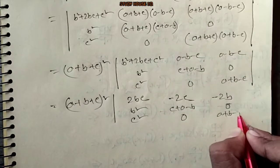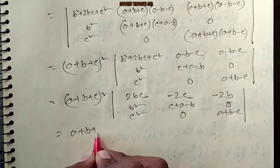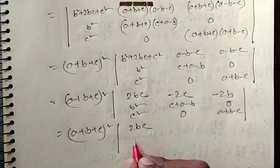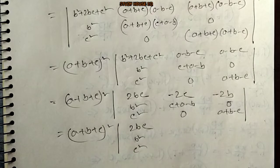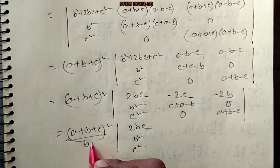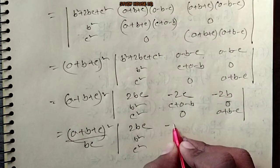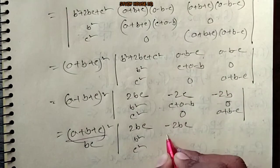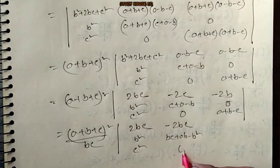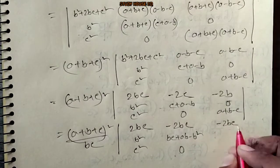a plus b plus c. I'm going to take the same here, but we will take the same. So I will add now. Here I will give b to the 2. Then I will give bc. Here I will give bc. So minus 2bc. This is bc plus ab minus b. Here I will give bc. Then I'll give bc.